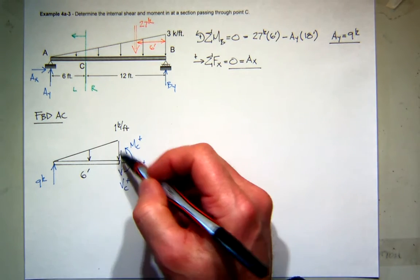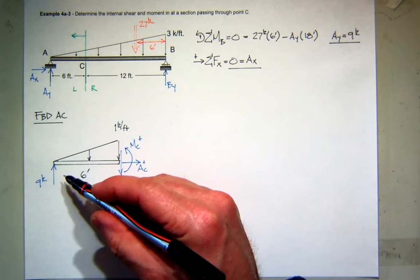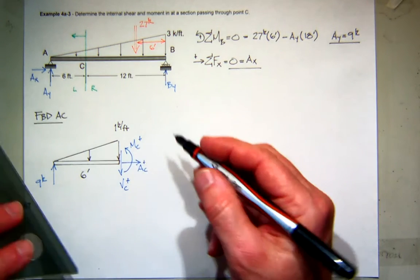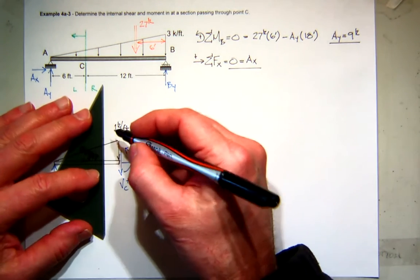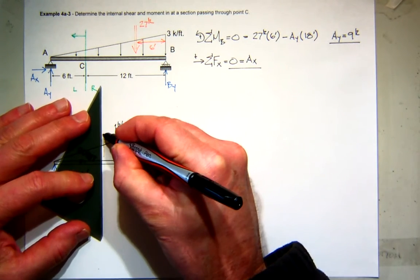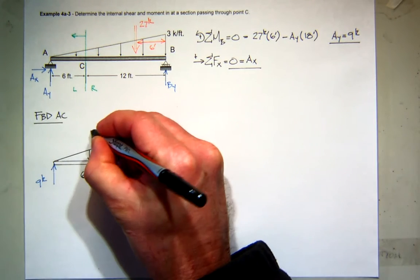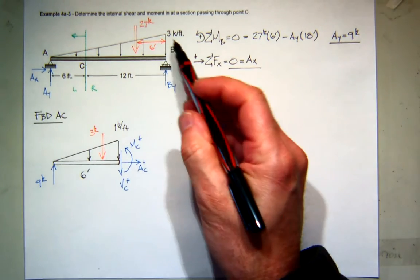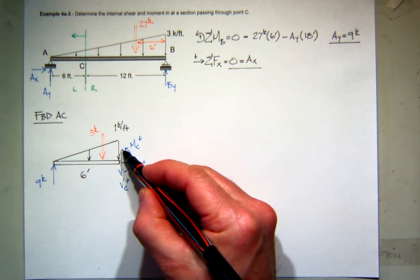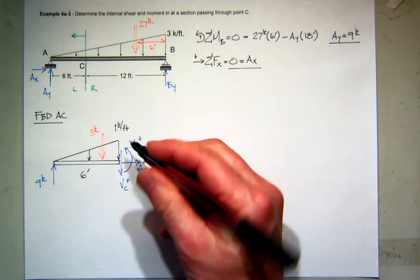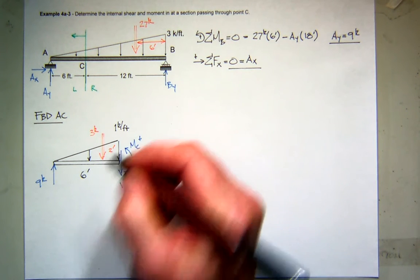The last thing I need is to get the concentrated equivalent of this distributed load to help me out. So, again, it's a triangle. So the area of the triangle is one-half the base times the height. So one-half of 6 times 1 gives me a force of 3 kips. And just like we did before, the distance from the big end is one-third the distance, and that would be 2 feet.